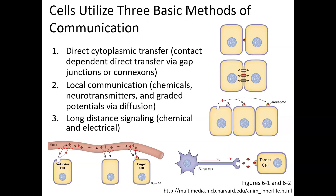There are three basic methods of communication. The first is direct cytoplasmic transfer, when cells have direct communication between them, usually via gap junctions — sometimes called connectons — little protein channels that allow information to be passed directly from cell to cell. The second is local communication, involving local chemicals sometimes known as autocrines or paracrines, neurotransmitters, or local electrical signals called graded potentials, which work by diffusion and decay fairly quickly over short distances.